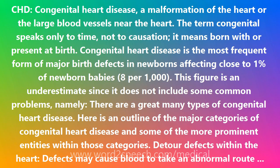Defects within the heart: defects may cause blood to take an abnormal route through the heart, passing directly between the right and left sides. This occurs when there is a defect in the wall — the septum — that normally separates the right and left sides of the heart. There is a hole in the heart. The two most common types of septal defect are...